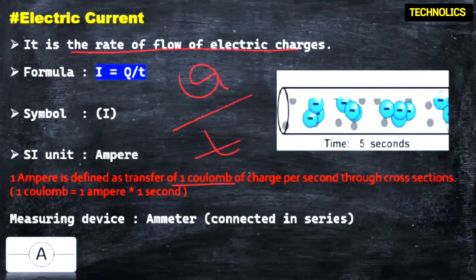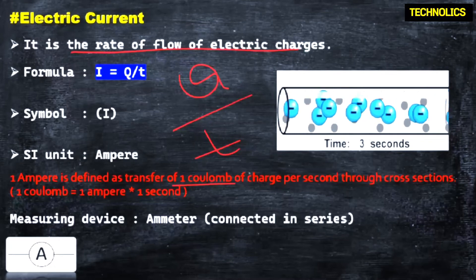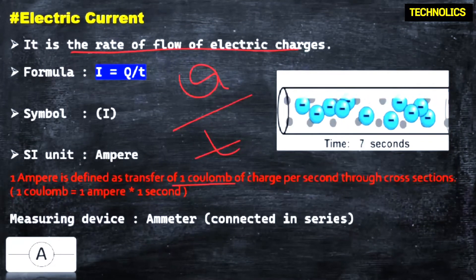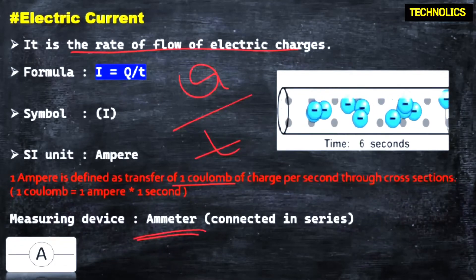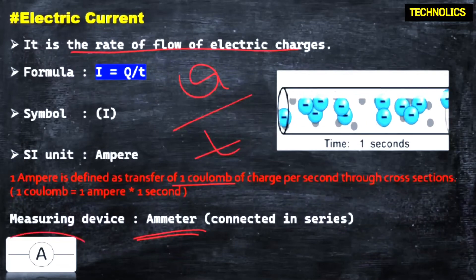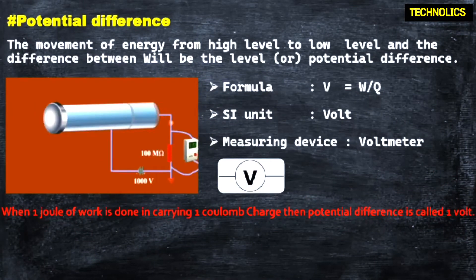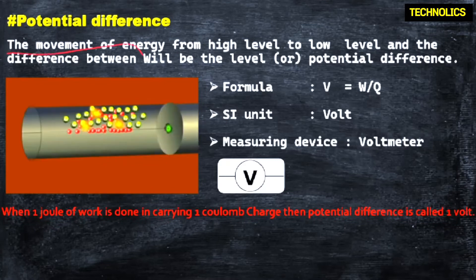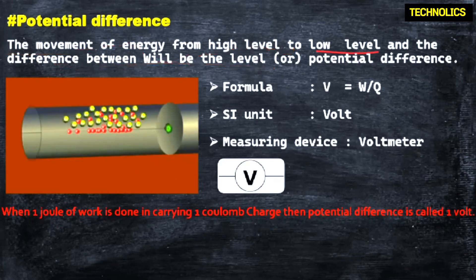So next, electrical current is measured using a simple device — an ammeter. The movement of energy from a high level to a low level, and the difference between them, is called the level difference or potential difference.